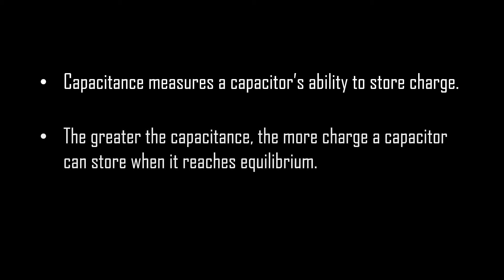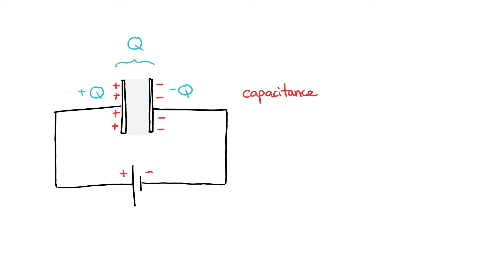We can define a capacitor's ability to collect and store energy in the form of an electrical charge by the measurement known as capacitance. The more charge a capacitor can store when it reaches equilibrium, the larger its capacitance. As an equation, capacitance is the amount of charge it can store for a given amount of potential difference.